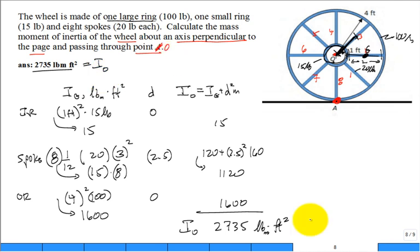But if you did want it at A, you would use the parallel axis theorem again, because point O is the center of mass of my whole wheel, isn't it? And so then it would be 2,735 plus. How far are you going to shift it? 4 meters, or not meters, 4 foot squared. And then what's the total mass of my system? I should have added that up.